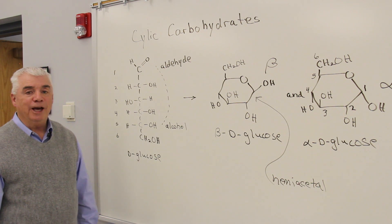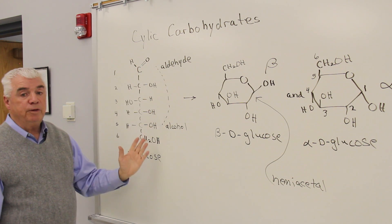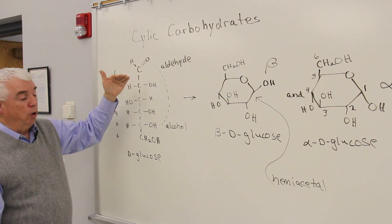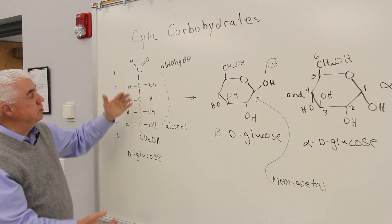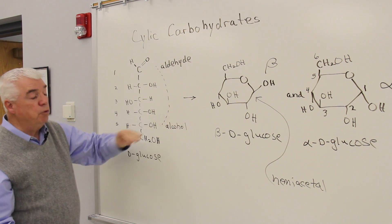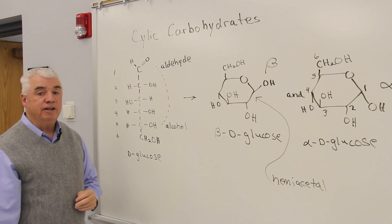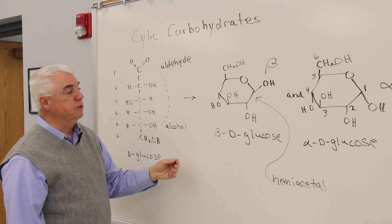The aldehyde group, as you know from the aldehyde chapter in organic, can react with alcohol groups. And what happens is that glucose, as it's twisting and turning and flexing bonds and so forth, this aldehyde group can react with the alcohol at position five. And as it does so, then a cyclic structure would come together.